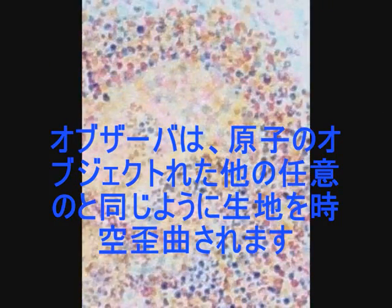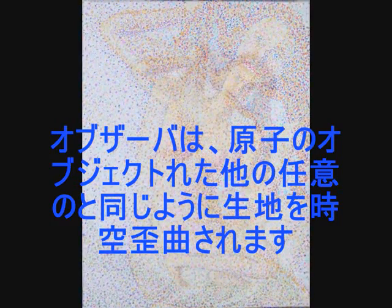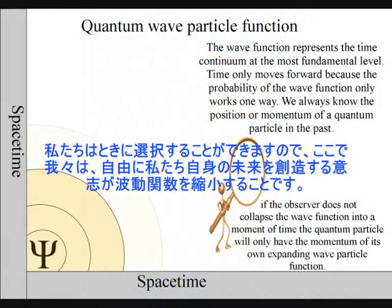The atoms of the observer bond together and then collapse the wave-function in unison, forming their own unique future, position or reference frame in space and time.